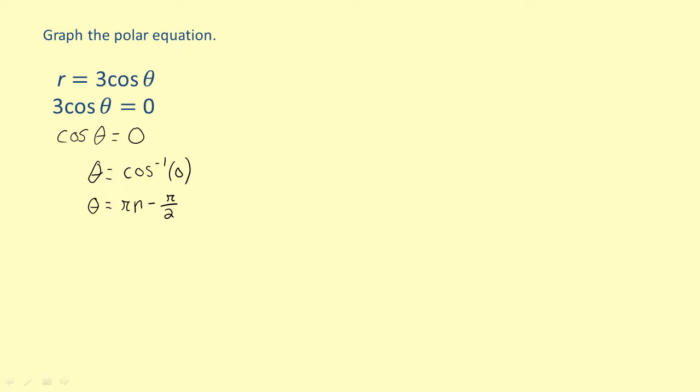Now let's substitute one of the values of theta into our original equation. We'll use pi over two. The cosine of pi over two is zero, so we have r equals three times zero, which is zero.